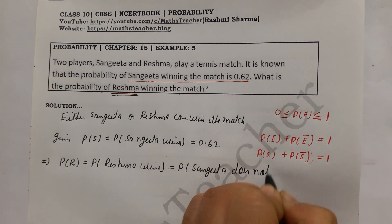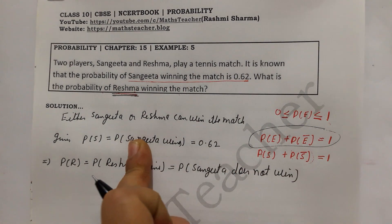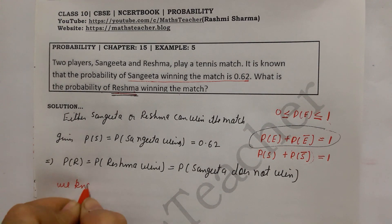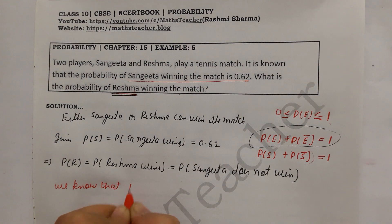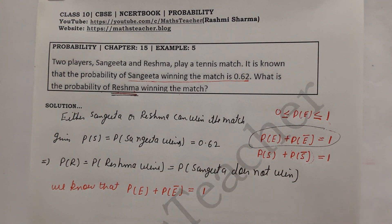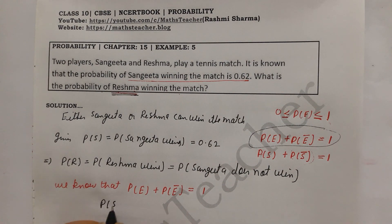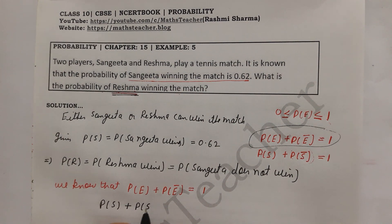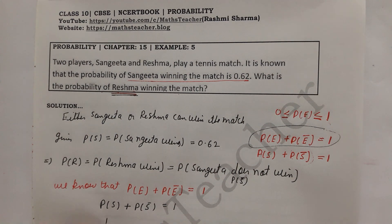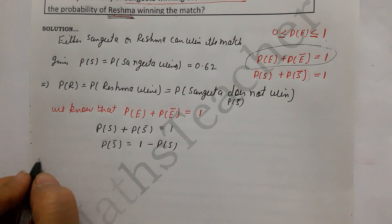We use the complement formula: P(E) + P(not E) = 1, so P(not E) = 1 − P(E). Applying this here: P(S) + P(S̄) = 1, which gives us P(S̄) = 1 − P(S). So we calculate 1 minus the probability of Sangita winning.